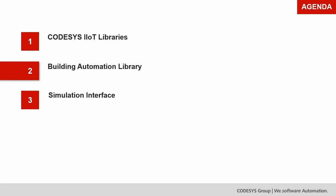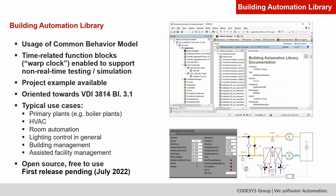The next topic is the new building automation library, which will have its first release during summer. We want to enable typical use cases such as primary plants or boiler plants, HVAC, room automation, lighting control, building management, and assisted facility management. The library is oriented towards the known VDI standards. Examples are part of the library — the idea is to take this library as a starting point and adapt it to your specific project needs. This library will be distributed open source for easy adaptation and will be free to use and available in the CodeSys store.